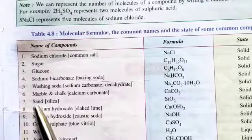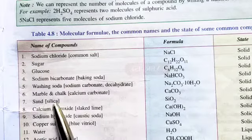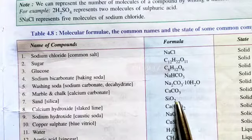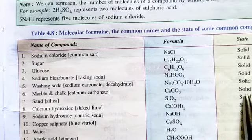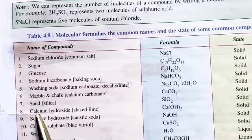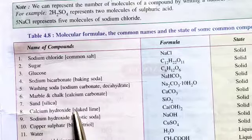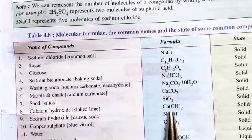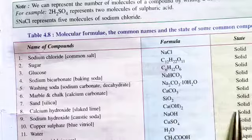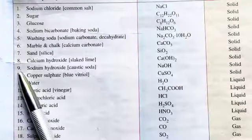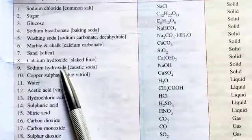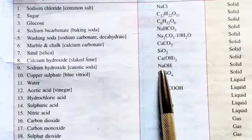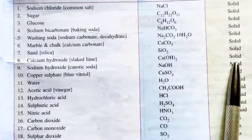7. Sand, which is also known as silica — its formula is SiO2 and its state is solid. 8. Calcium hydroxide, which is also known as slaked lime — its formula is Ca(OH)2 and its state is solid. 9. Sodium hydroxide, which is also known as caustic soda — its formula is NaOH and its state is solid.